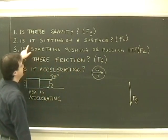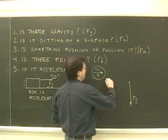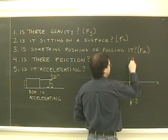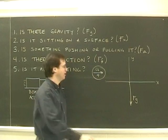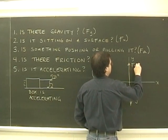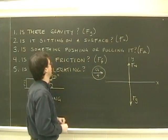Second question, is it sitting on a surface? Well, let me draw my x and y axis. X and y. It is sitting on the surface, so we need a normal force. Fn. And it's at 90 degrees to the surface, out from the surface.